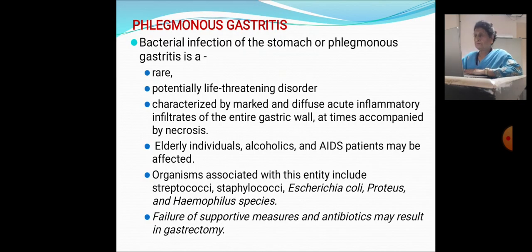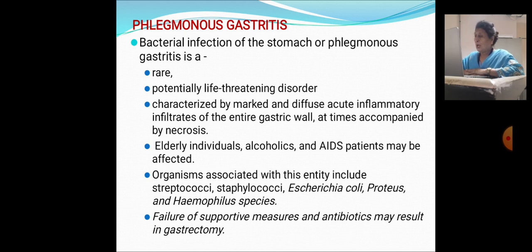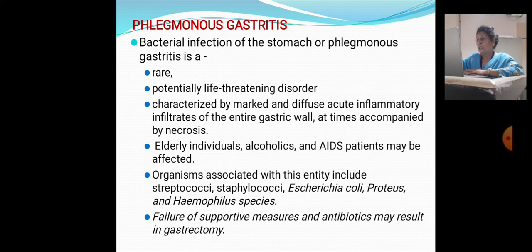Phlegmonous gastritis is a rare, potentially life-threatening bacterial infection of the stomach characterized by marked and diffuse acute inflammatory infiltrates of the entire gastric wall, sometimes accompanied by necrosis. Elderly individuals, alcoholics, and patients with AIDS are most commonly affected. Organisms associated include Streptococcus, Staphylococcus, E. coli, Proteus, and Haemophilus species. Failure of supportive measures and antibiotic therapy may result in the need for gastrectomy.